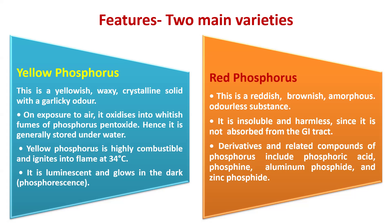Red phosphorus is odorless and insoluble, and it is harmless since it is not absorbed from the GI tract. Derivatives and related compounds of phosphorus include phosphoric acid, phosphine, aluminum phosphide, and zinc phosphide. These are the derivatives of phosphorus.